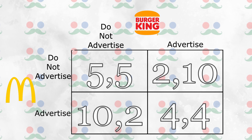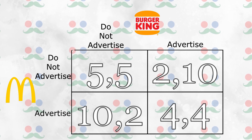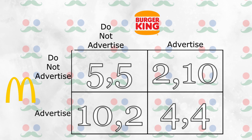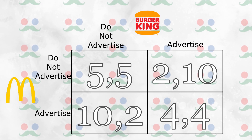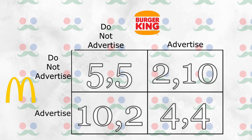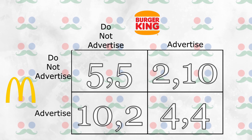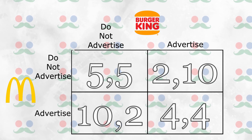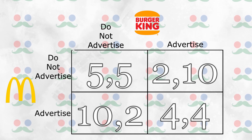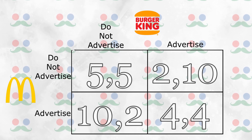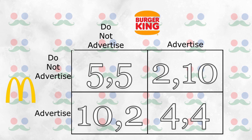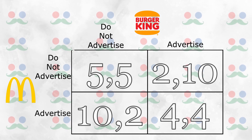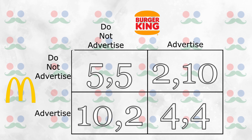If McDonald's and Burger King each do not advertise their food, they'll make a profit, or a payoff, of $5. However, if one of the restaurants advertises and the other does not, the one that advertises will make more money than the one who does not, and the non-advertiser will lose some profit. However, if both companies advertise, they'll both make less profit than they would have otherwise because of the cost of advertising. From this, we can set up what we call a payoff matrix.